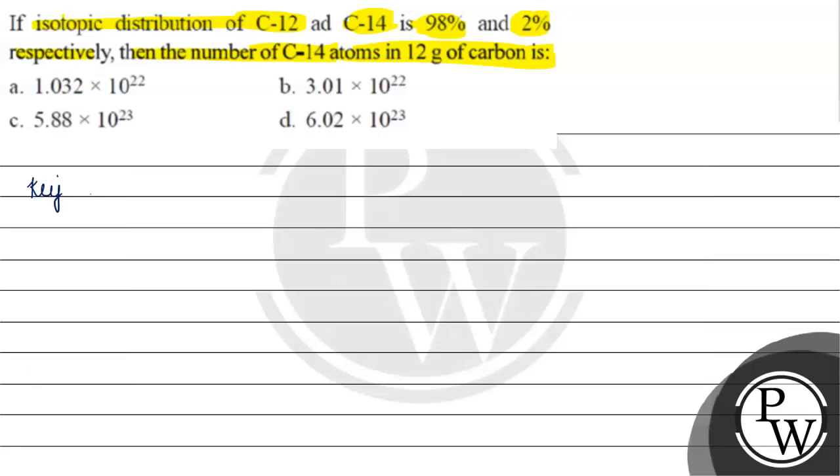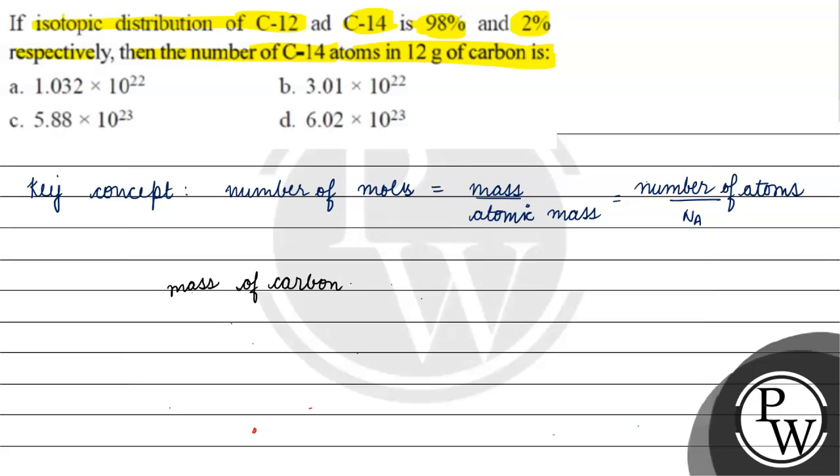The key concept for this question is number of moles equals mass by atomic mass, which equals number of atoms by Avogadro's number.